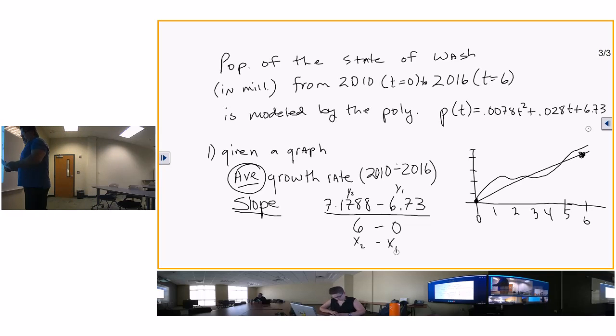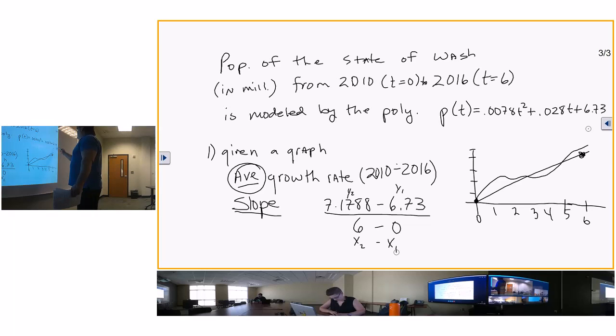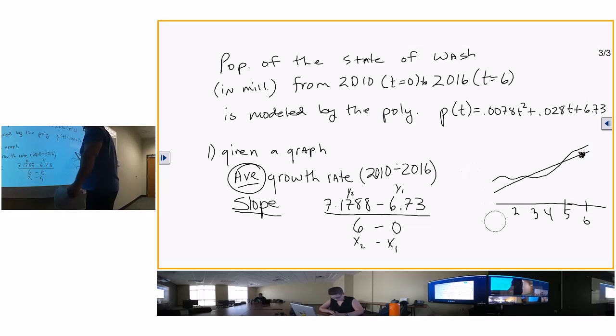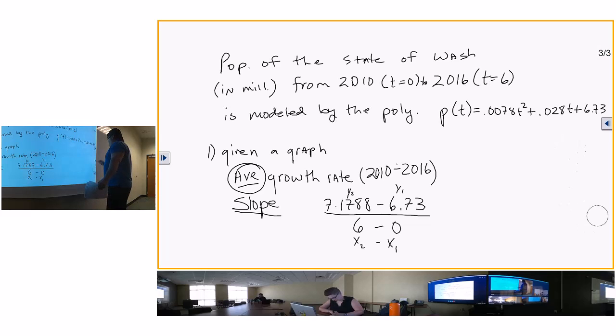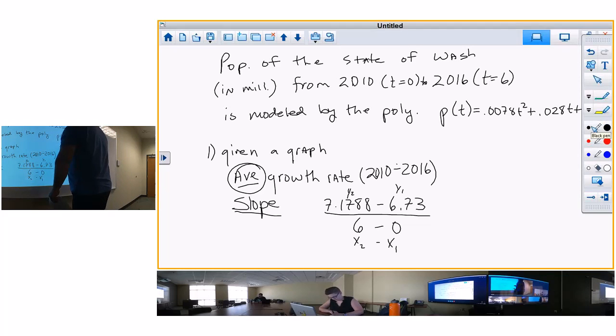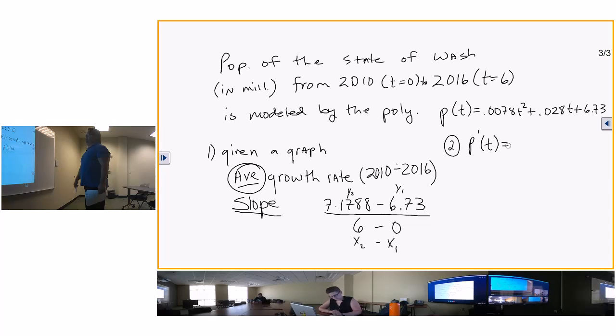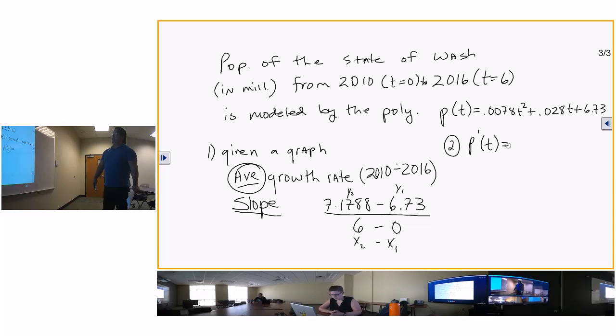I'll just give you the numbers. 7.1788 minus 6.73 over 6 minus 0. That's your y sub 2 minus your y sub 1 over x sub 2 minus x sub 1.